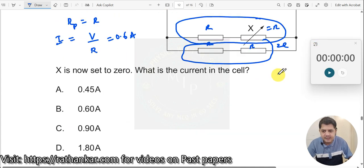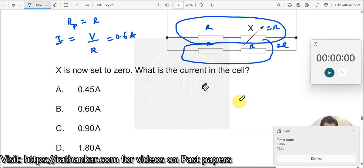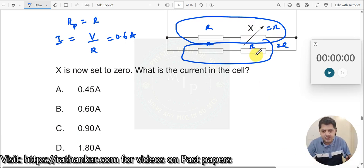Now what we do is, if X is now set to 0, what is the current in the resistor? If I make this to be 0, then what will be the current here?